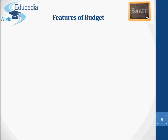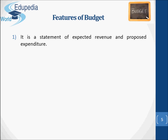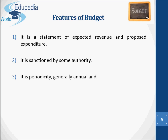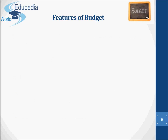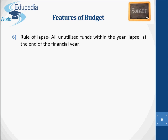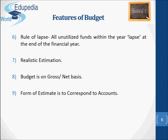What are the features of a budget? It is a statement of expected revenue and proposed expenditure. It is sanctioned by some authority. Its periodicity is generally annual, and it prescribes the manner in which revenue is collected and expenditure is incurred. Budget is prepared on a cash basis. The rule of lapse applies — all unutilized funds within the year lapse at the end of the financial year. Realistic estimation is required. The budget may be on a gross or net basis, and the form of estimate is to correspond to accounts on a departmental basis.